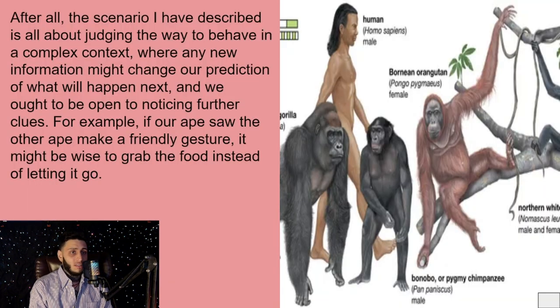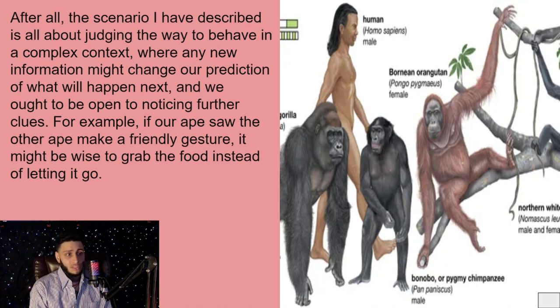After all, the scenario I have described is all about judging the way to behave in a complex context, where any new information might change our prediction of what will happen next, and we ought to be open to noticing further clues. For example, if our ape saw the other ape making a friendly gesture, it might be wise to grab the food instead of letting it go.